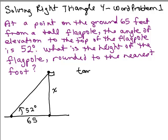So the tangent of 52 degrees is the side opposite, which is X, over the side adjacent, which is 65. So if I just multiply both sides by 65, that will give me X equals 65 times the tangent of 52 degrees. I'm just multiplying both sides by 65. I just like writing the X on the left-hand side. I could have said 65 tangent of 52 degrees equals X, same thing.